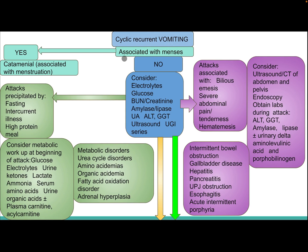For cyclic or recurrent vomiting, if it is associated with menses, this is catamenial vomiting, meaning associated with menstruation. If not, consider electrolytes, glucose, BUN, creatinine, amylase, lipase, urinalysis, ALT, GGT, ultrasound, and upper GI series. If the attack is precipitated by fasting, intercurrent illness, or high protein meal, consider metabolic workup at the beginning of the attack including glucose, electrolytes, urine ketones, lactate, ammonia, serum amino acids, urine organic acids, and plasma carnitine and acylcarnitine.